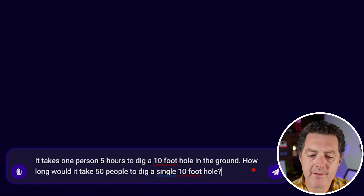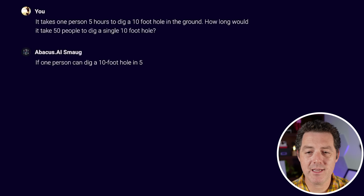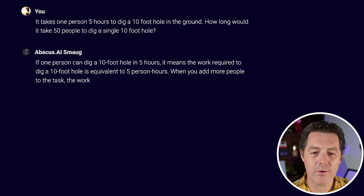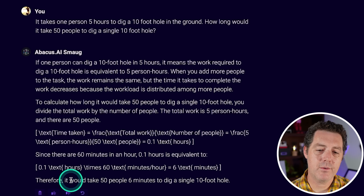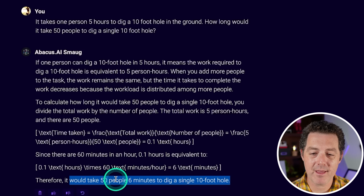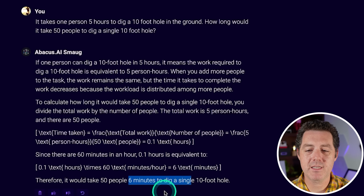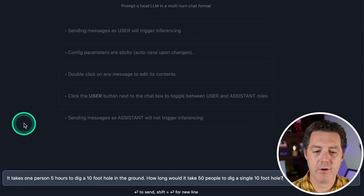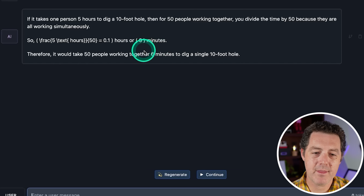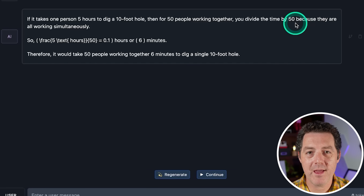It takes one person five hours to dig a 10-foot hole in the ground. How long would it take 50 people to dig a single 10-foot hole? The 70B model uses a proportional decrease in time — six minutes. That is correct. Same question on the smaller model: also six minutes. Both a pass.